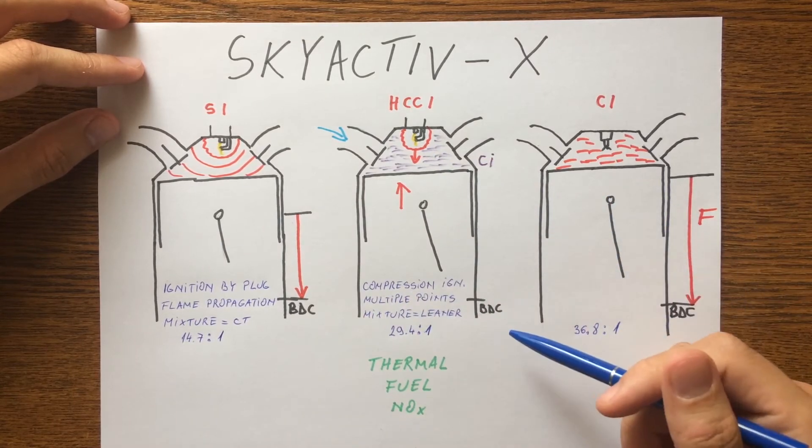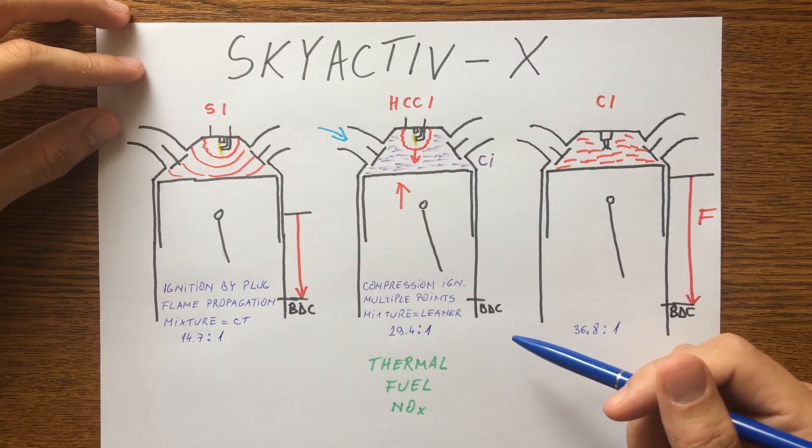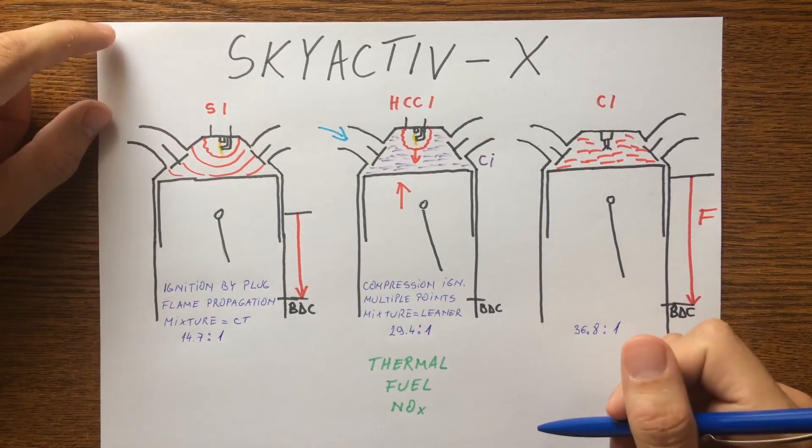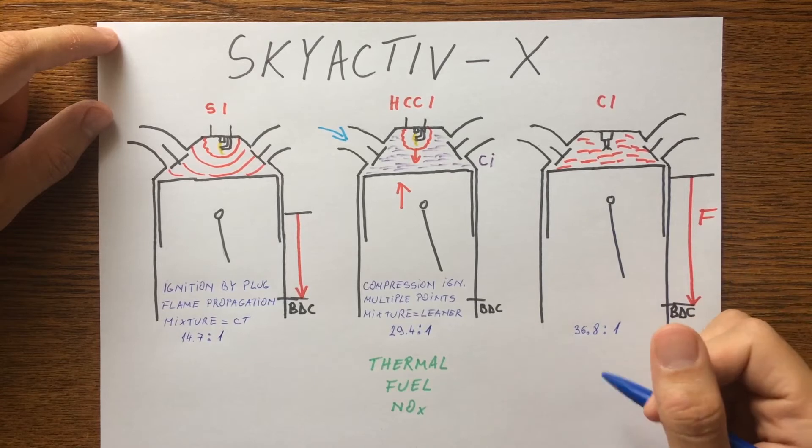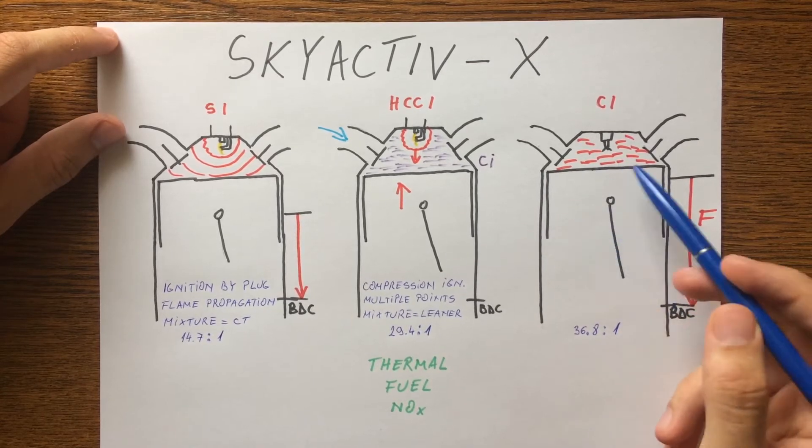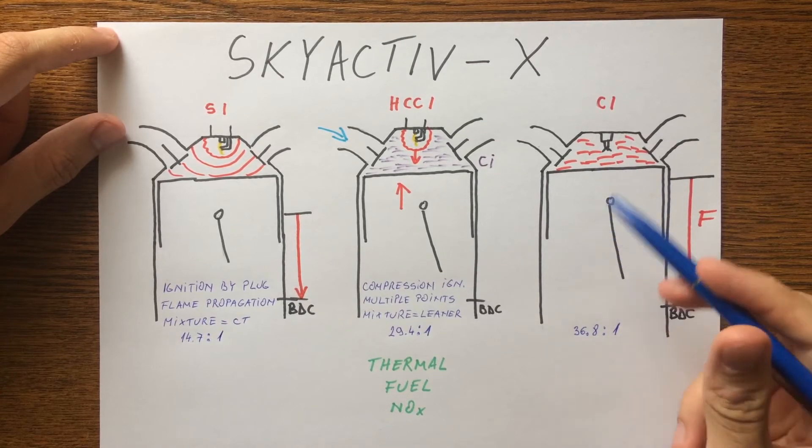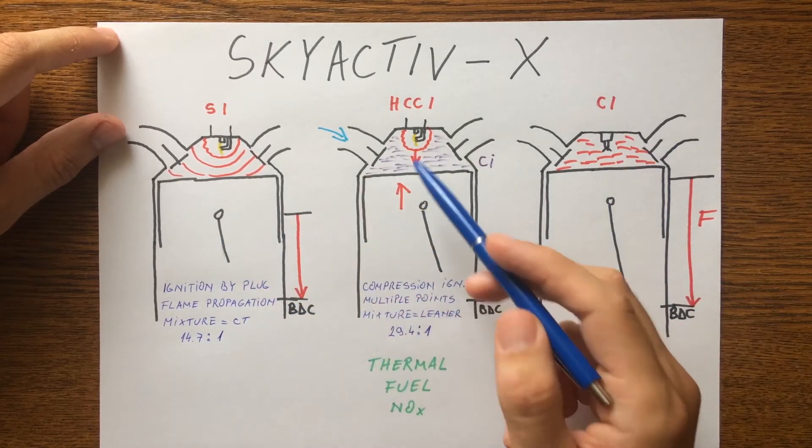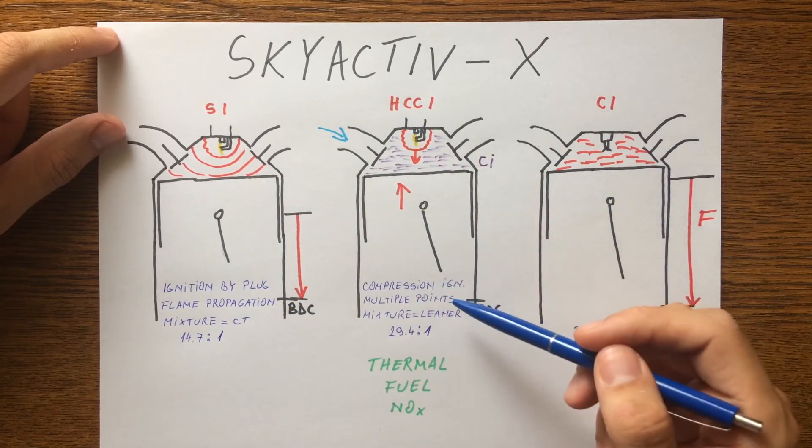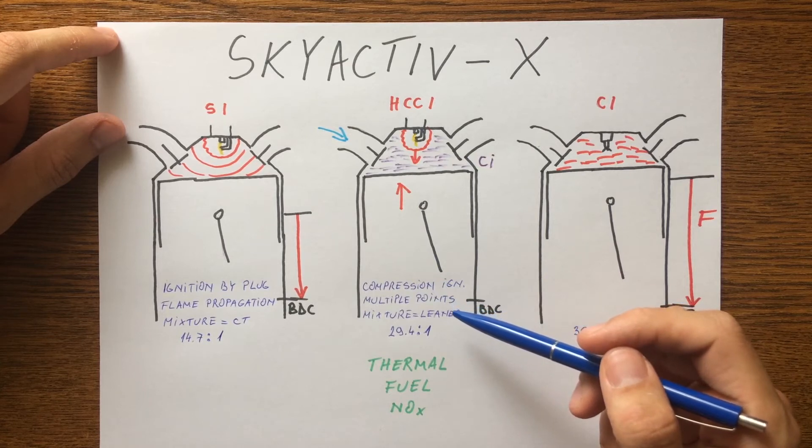In other words, Skyactiv-X combines the characteristics of both diesel and gasoline engines. Compression ignition is a combustion method adapted for diesel engines, and trying to do the same combustion in a gasoline engine is called HCCI, which stands for Homogeneous Charge Compression Ignition.